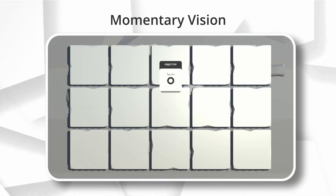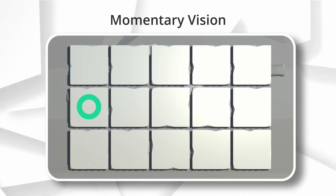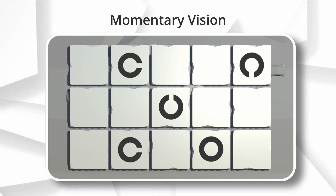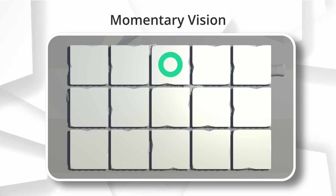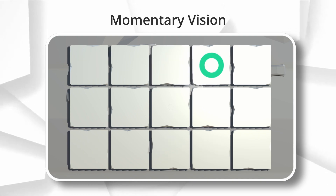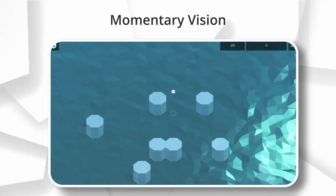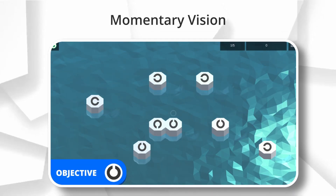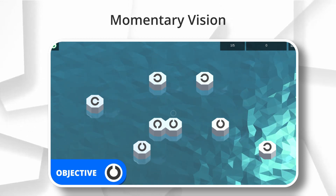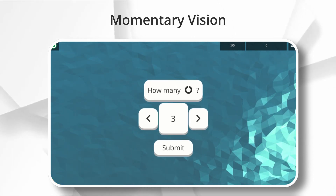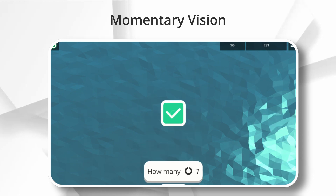Momentary vision looks something like this. We'll flash a lot of information at once and you'll have to process it. In this case, there are a bunch of letter C's arranged in different orientations, and among them is a circle — your job is to find that circle. Here's another example: your objective is to count all the C's in that exact orientation.